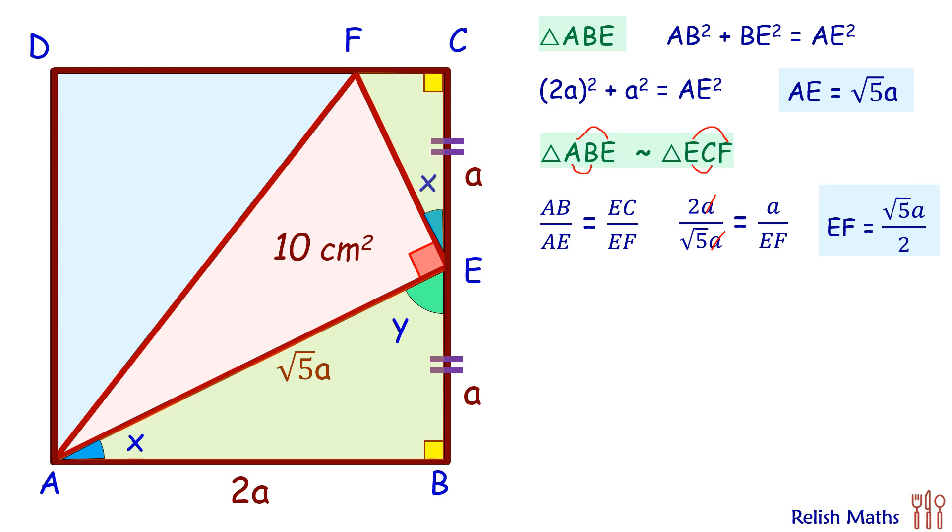Now we have the value of AE and the value of EF, so we can find the area of triangle. The area of triangle AEF equals half base times height. Putting the values, this area is given as 10, and AE and EF we have already calculated. Solving it, we'll get the value of A² as 8.